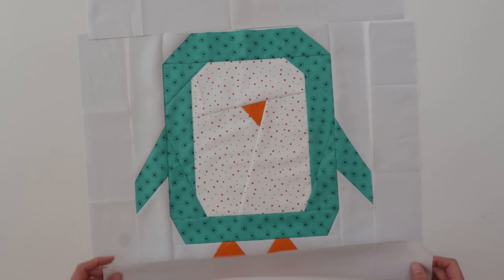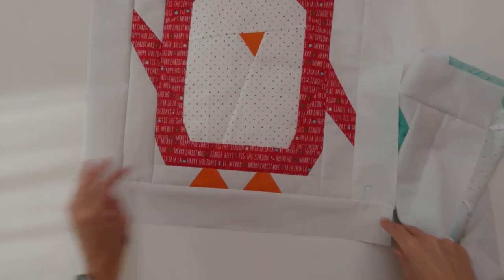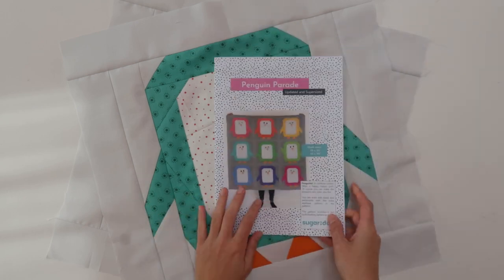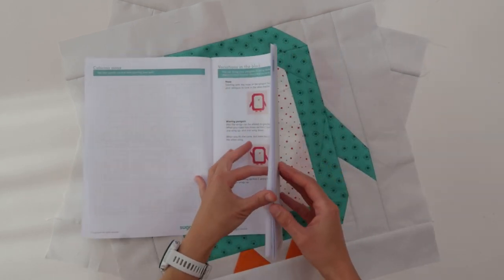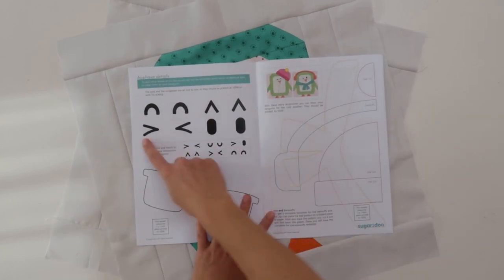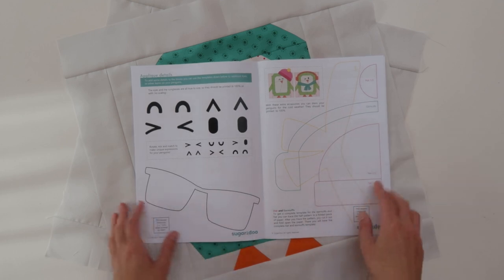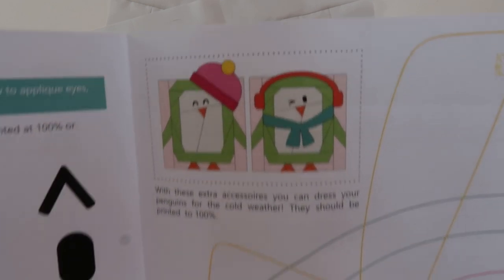There we go, two penguin quilt tops ready. Well, almost ready, because in the penguin parade pattern you will also find applique eyes and extra attributes that you can add to your penguin.